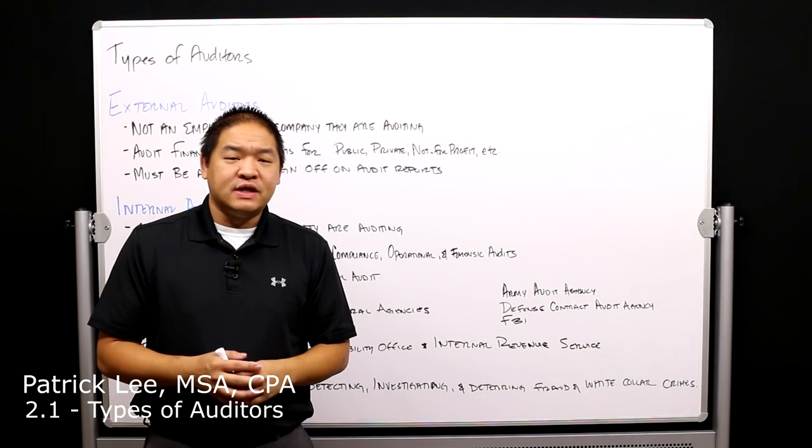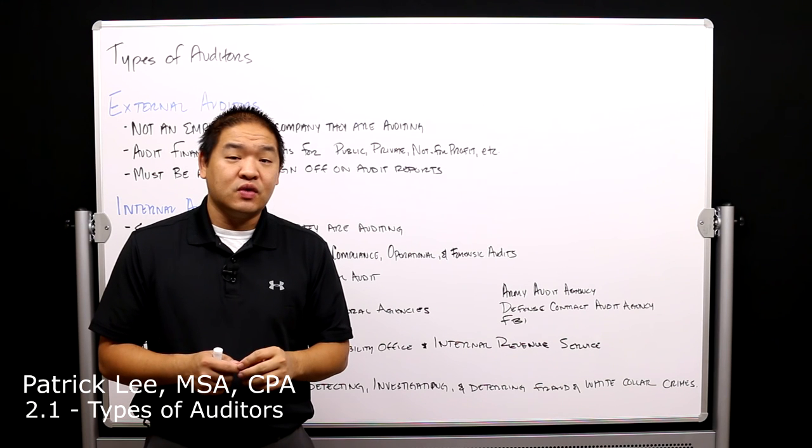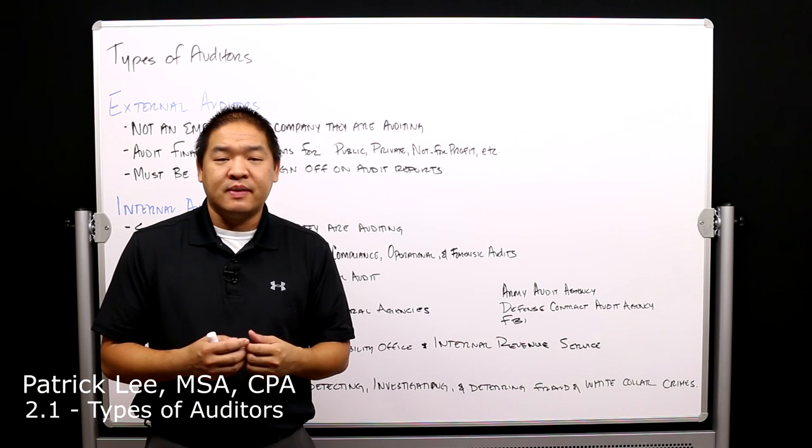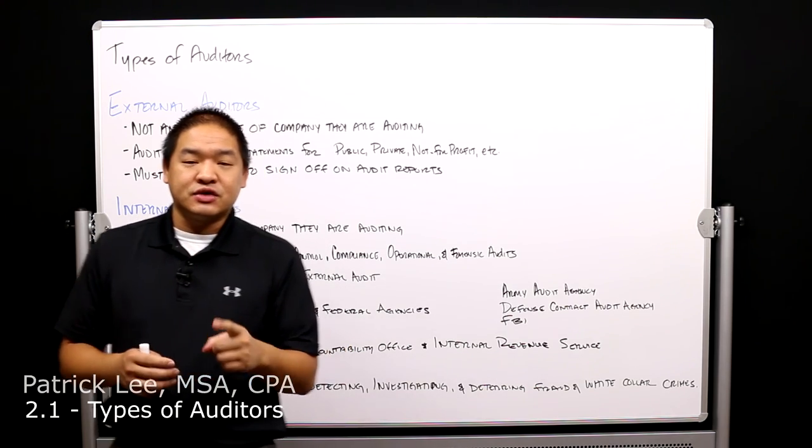All right, in this lesson we're going to go over the different types of auditors there are when it comes to auditing. So the first one and the most common one that we're going to be talking about throughout this auditing series is external auditors.